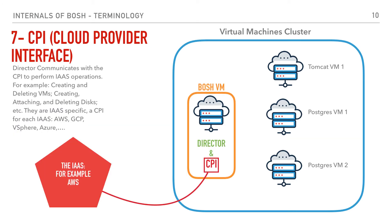The last term we'll cover is the CPI, or the cloud provider interface. For the BOSH director to be able to create VMs or perform any IaaS-specific actions, it will need to communicate with the IaaS of choice — and that's the responsibility of the CPI. A CPI is created for one single IaaS. So for example, there's an AWS CPI, a vSphere CPI, an OpenStack CPI — all of them are separate softwares, but all of them implement a certain interface that the director understands. This interface contains common actions that are common to all IaaS providers.